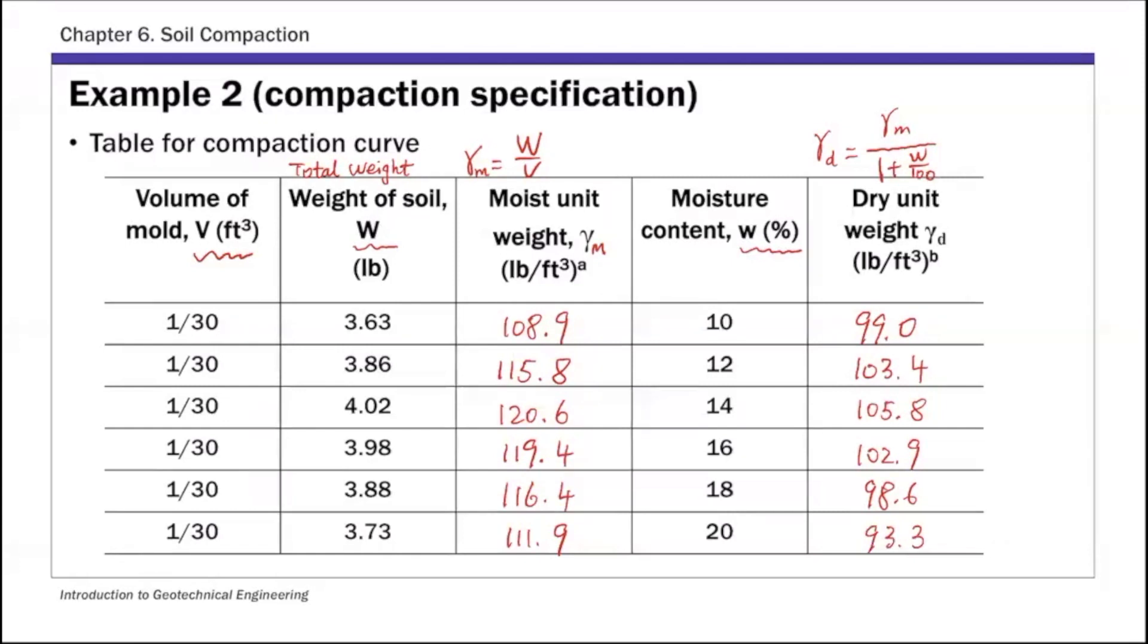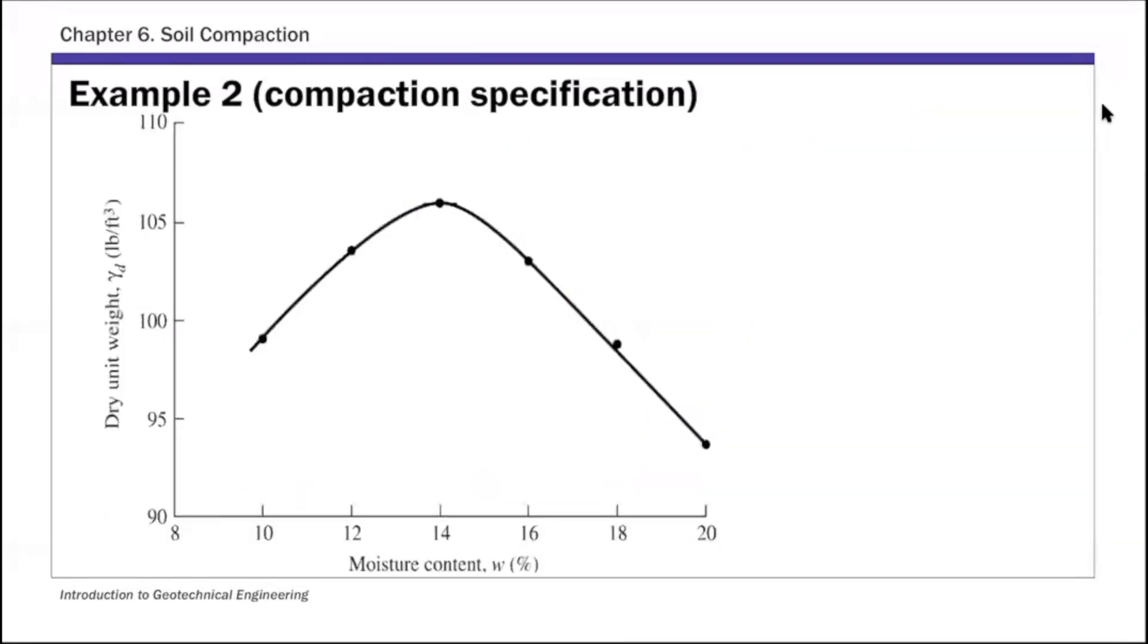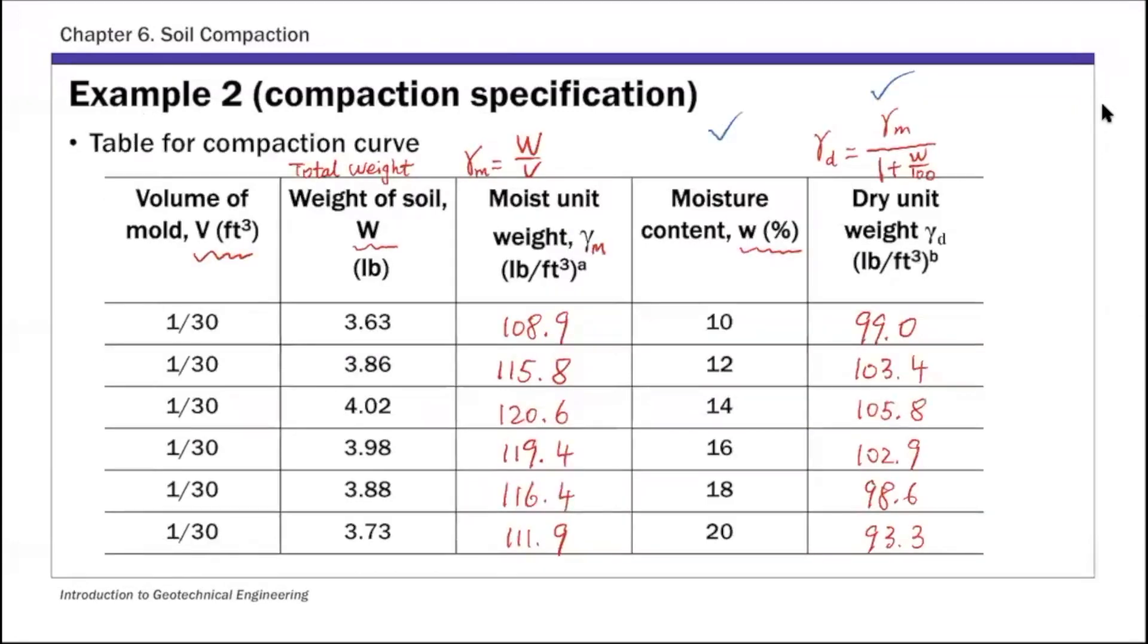So we have the dry unit weight and moisture content. We're going to take this column here and this last column, dry unit weight, and plot compaction curve. So this is that compaction curve basically using that last two columns of data. Moisture content versus dry unit weight.